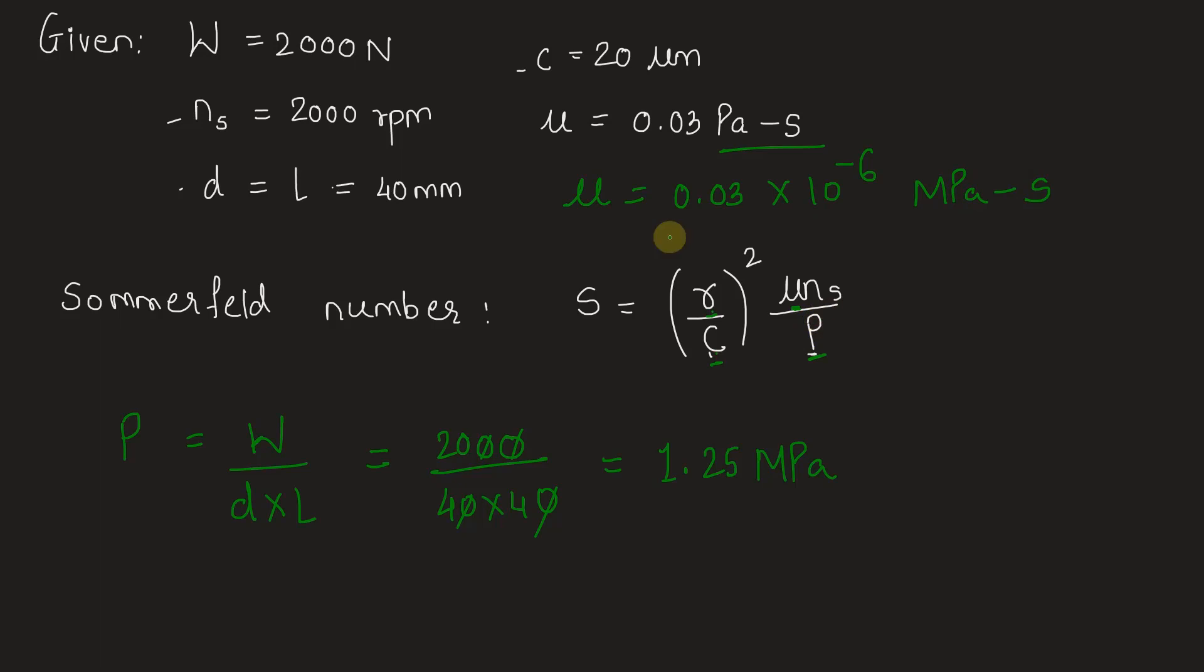Ns is given in revolutions per minute; we will have to convert it into revolutions per second. Let's do that too. So Ns will equal 2000 divided by 60, which is 100 by 3 revolutions per second.